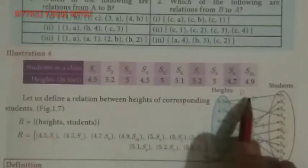Student S4 is also 4.5. So two students have 4.5 height. That is why they are denoted. So this arrow marker is very important. We can write 4.7 for one student, same thing. 4.9 for one student. 5cm maybe for 2 or 3 members.